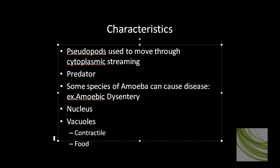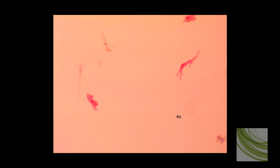You can look at an amoeba and tell it by things like its nucleus, vacuoles—you'll see both contractile and food vacuoles—and you will see the pseudopods. We're going to look at three different slides we have here at the college.